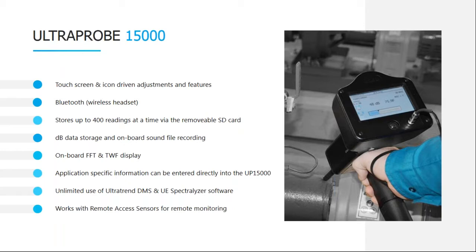One neat story about the Bluetooth: at a conference, a gentleman with Bluetooth-capable hearing aids pairs his Ultra Probe 15,000 directly to his hearing aids — a great example for people with hearing challenges. A second gentleman doing infrared scans of high-voltage electrical equipment said that because of the Bluetooth wireless headset, he is now fully enclosed in his arc flash suit without a cable coming out. So if you're doing high-voltage inspections where you have to suit up, a Bluetooth headset is perfect, and the 15,000 has that built right in.